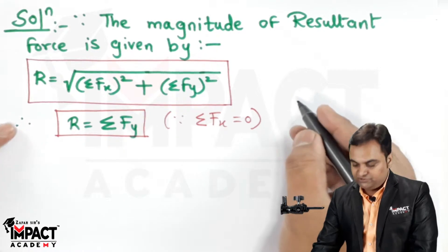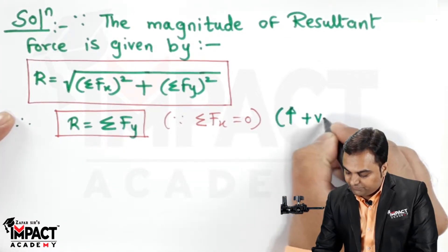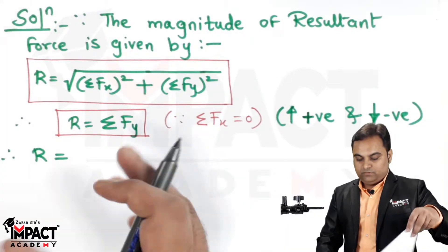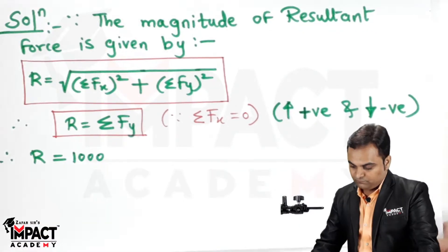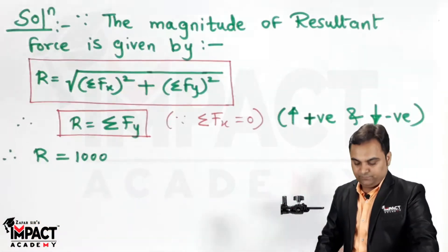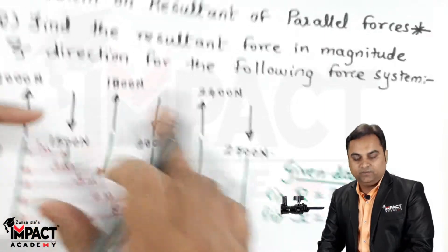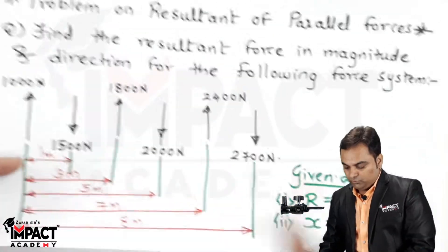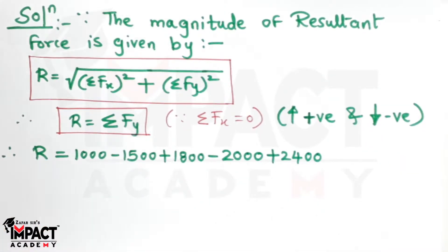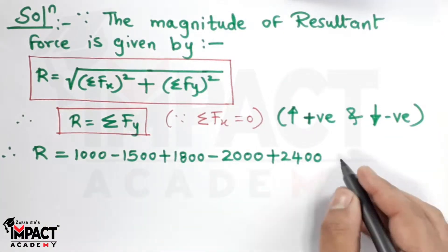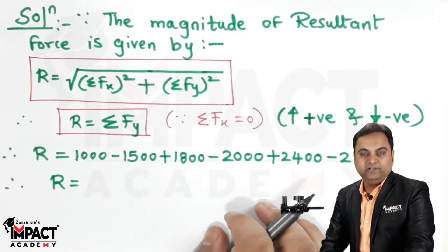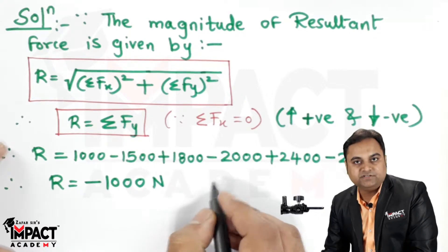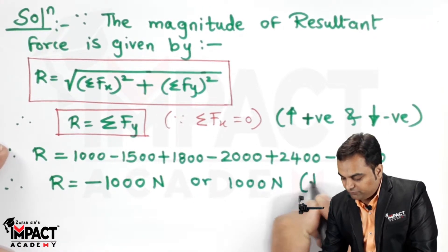Since there are only vertical forces, the sign convention is: upward forces treated as positive and downward forces as negative. Therefore, the resultant is: +1000 (upward), −1500 (downward), +1800 (upward), −2000 (downward), +2400 (upward), −2700 (downward). When I calculate, the resultant force comes out to be −1000 Newton. Since the answer is negative, the resultant force acts in the downward direction.